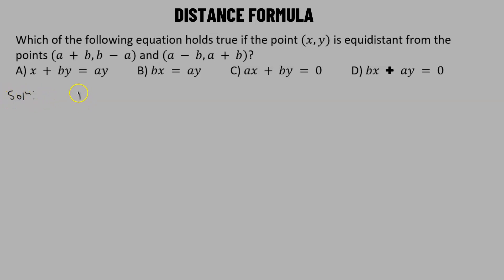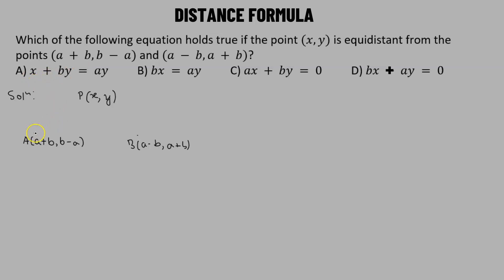We have a point P with coordinates x comma y. Then we have point A with x-coordinate a plus b and y-coordinate b minus a. We have another point B with x-coordinate a minus b and y-coordinate a plus b. We need to find which equation holds true given that the distance AP equals the distance PB — that is, point P is equidistant from A and B.